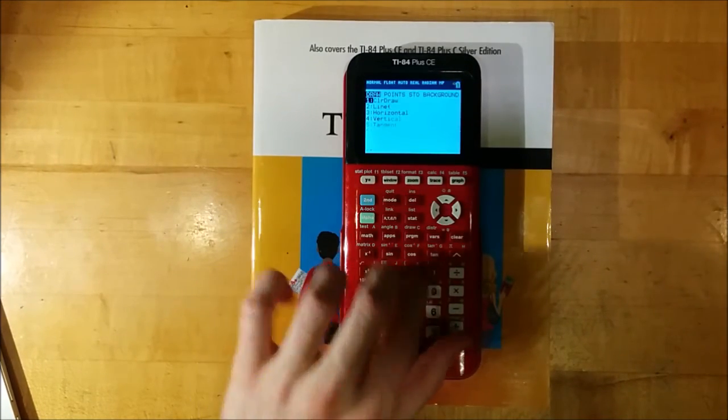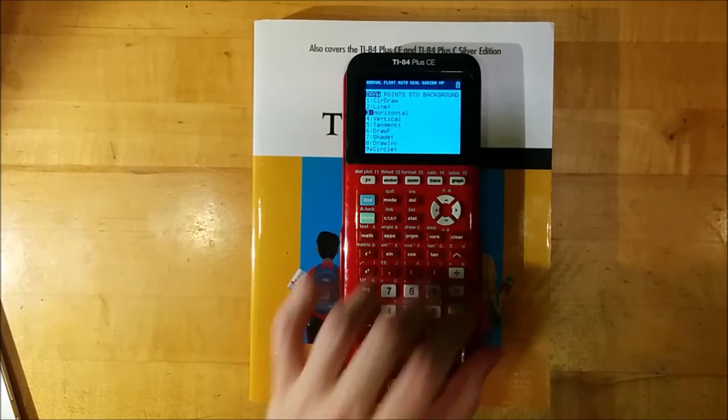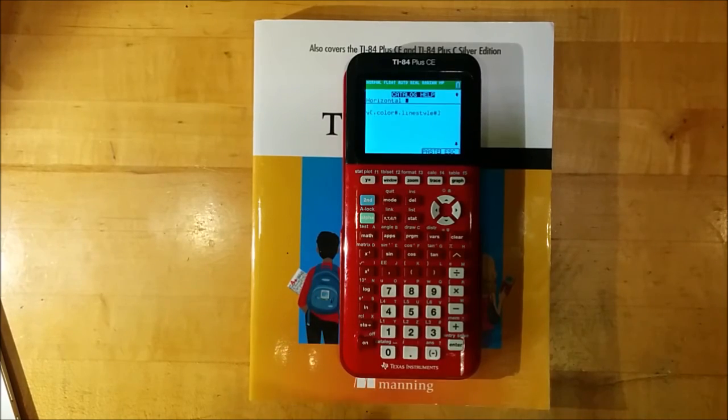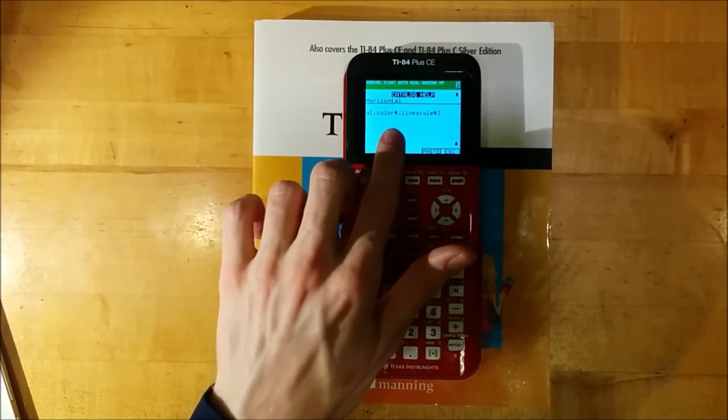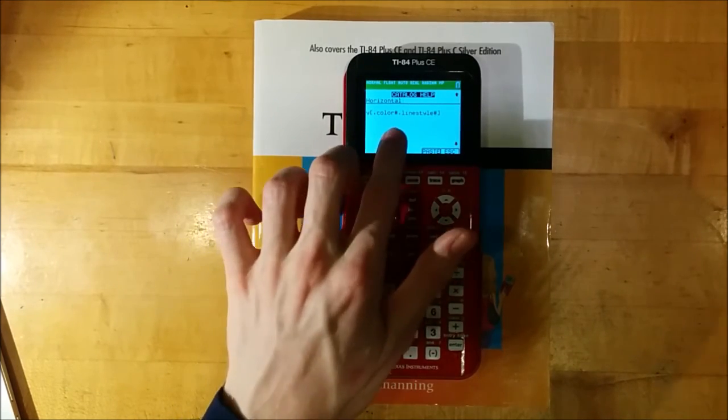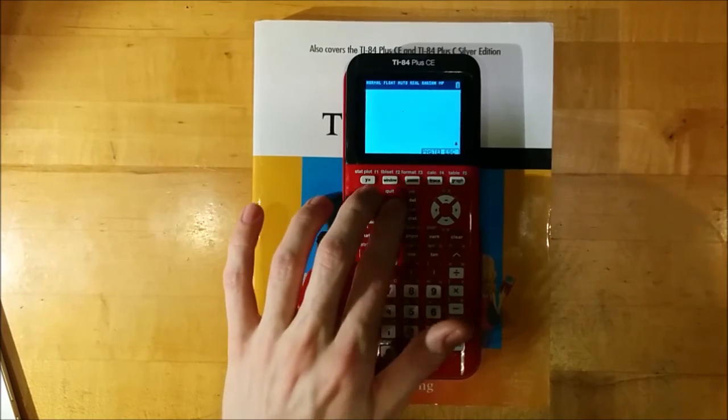As with many of the menus on your calculator, you can find information about each of these commands by going to the command and pressing plus. The calculator will tell you that after horizontal, it's expecting at least a Y value and then optionally, a color and a line style for that horizontal line.